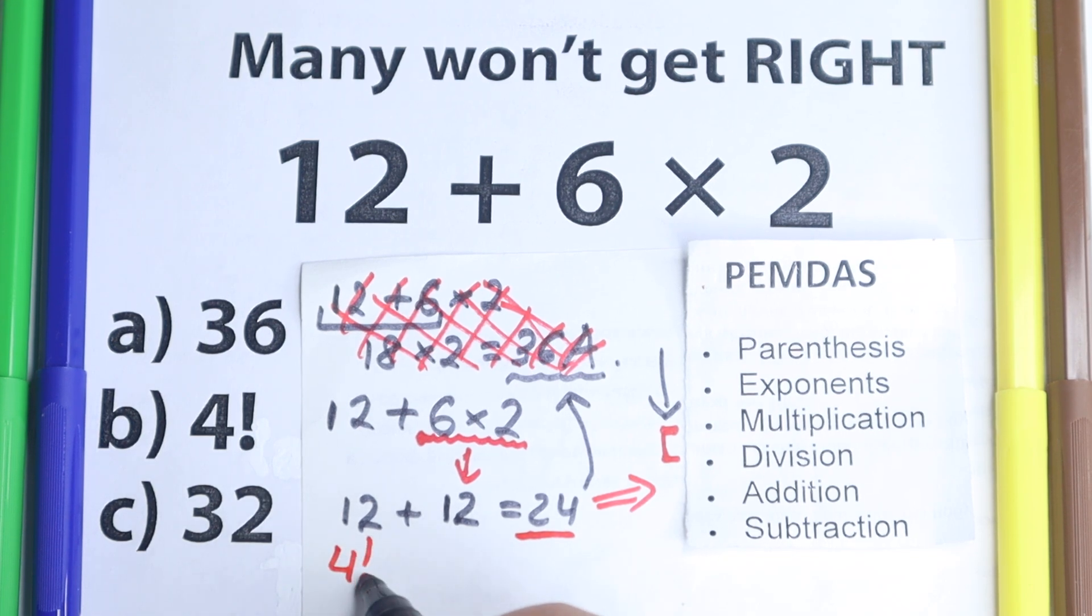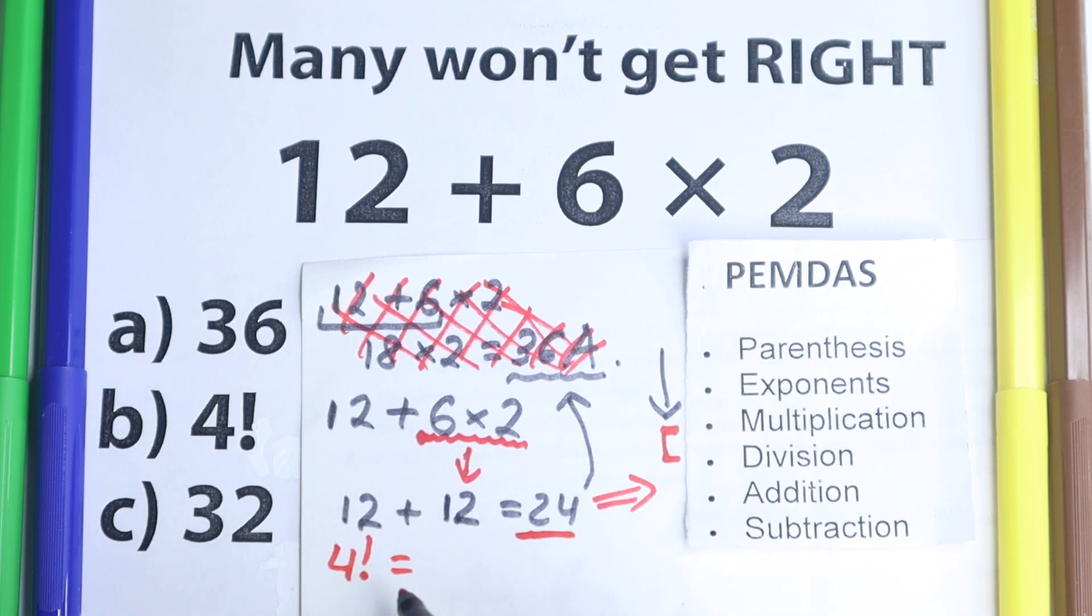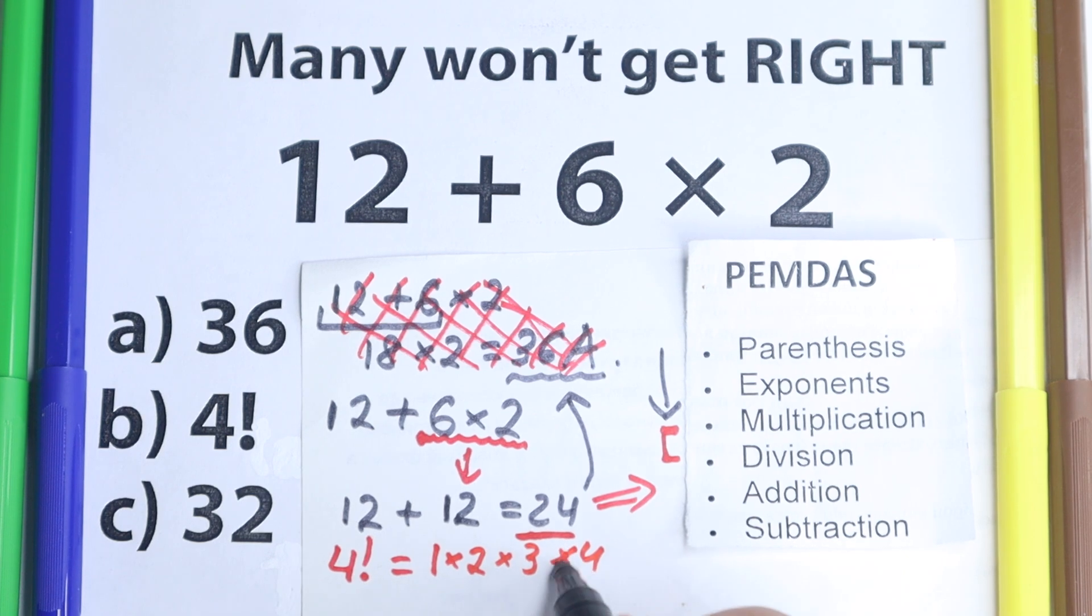So 4 factorial, let's look at this 4 factorial real quick. From school we need to know that factorial is a product from 1 until this number. For example, like 6 factorial, 1 to 6. 4 factorial, we have like 1 times 2 times 3 times 4. Let's look at it real quick.